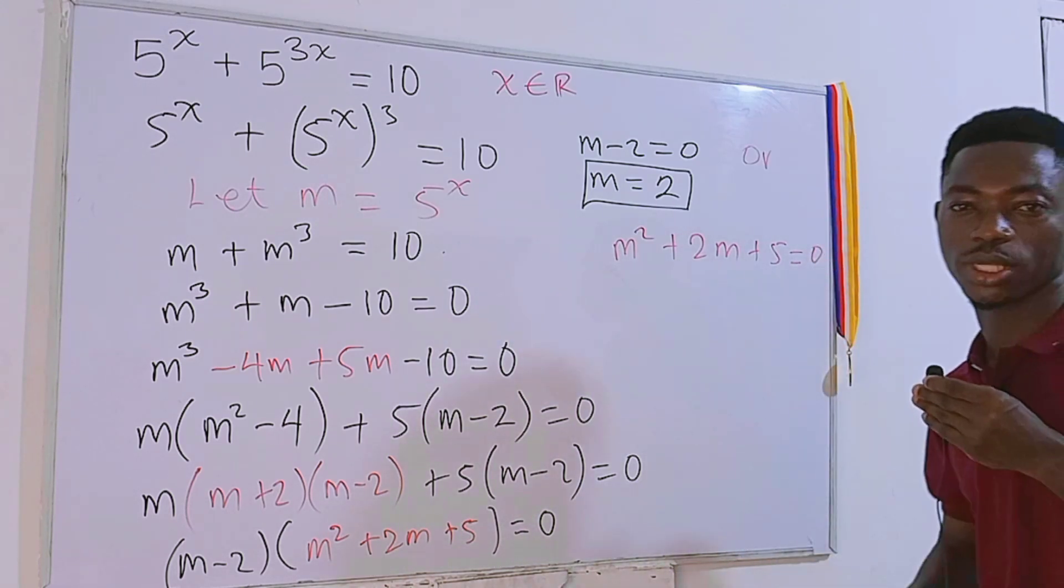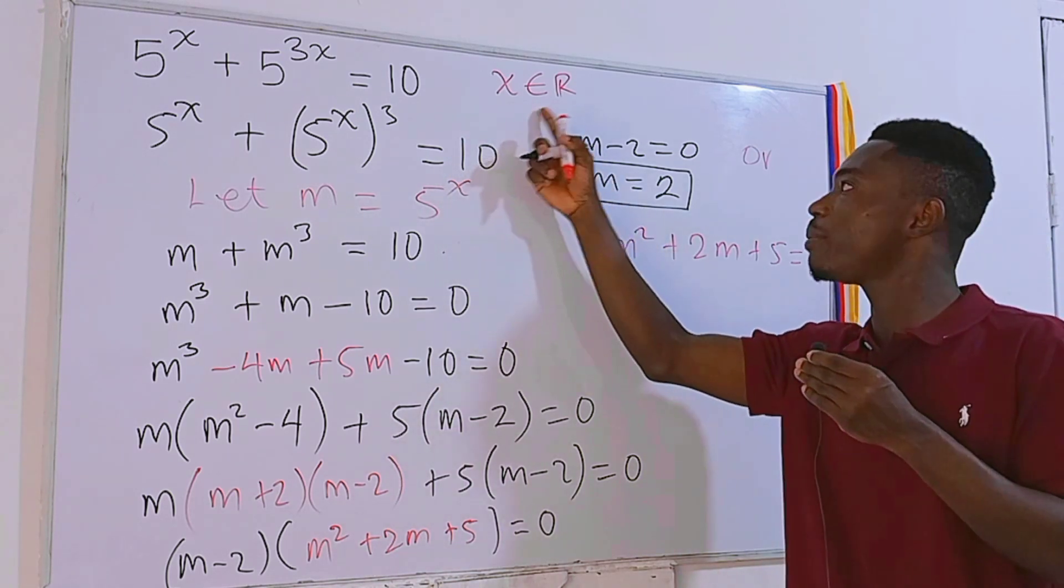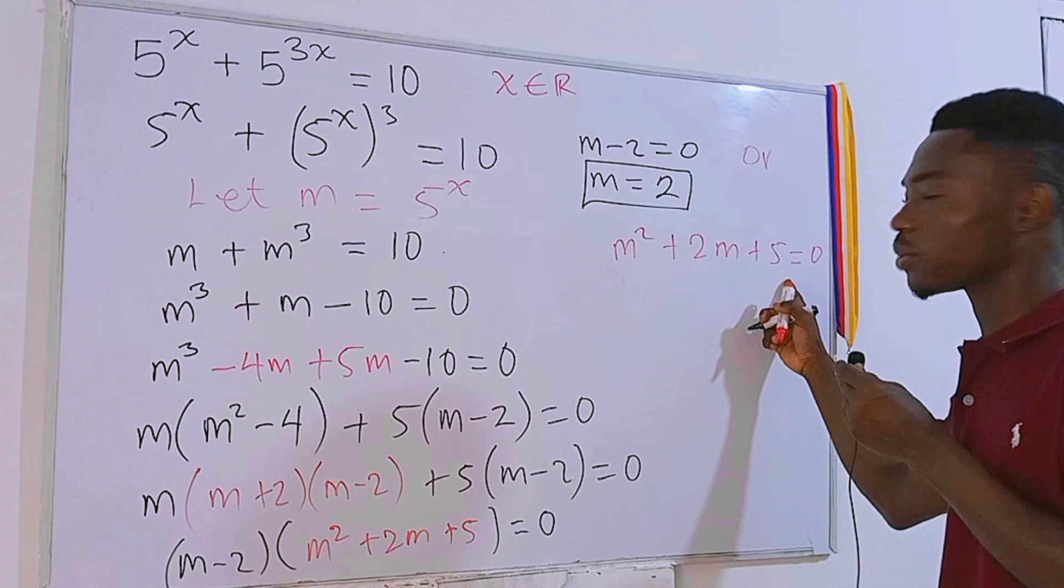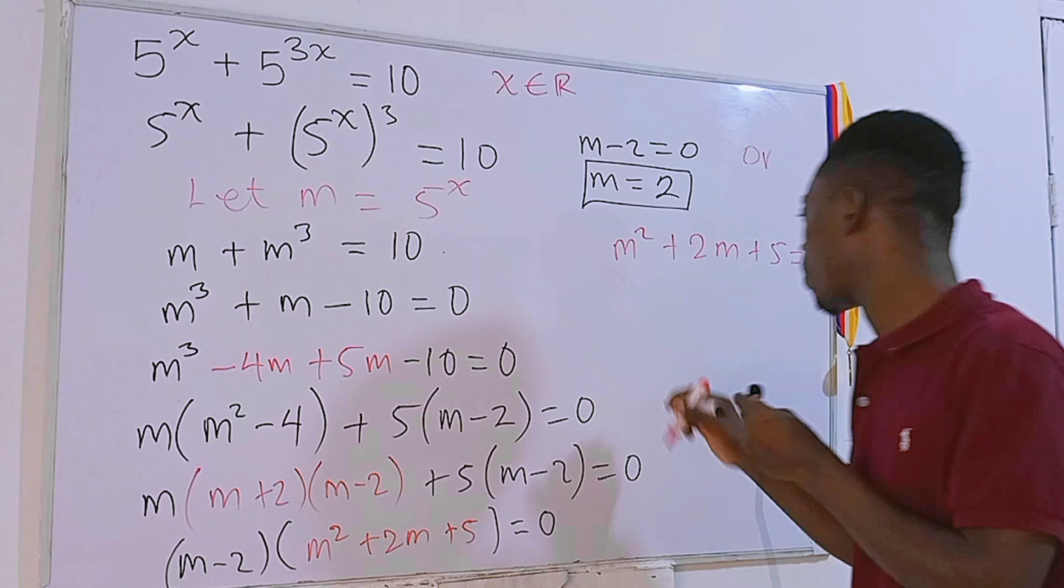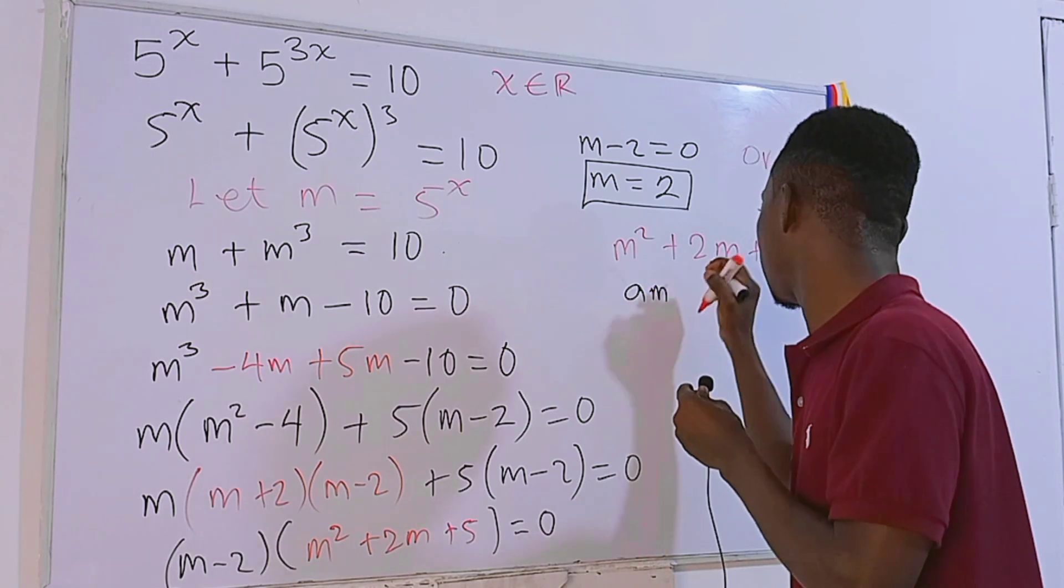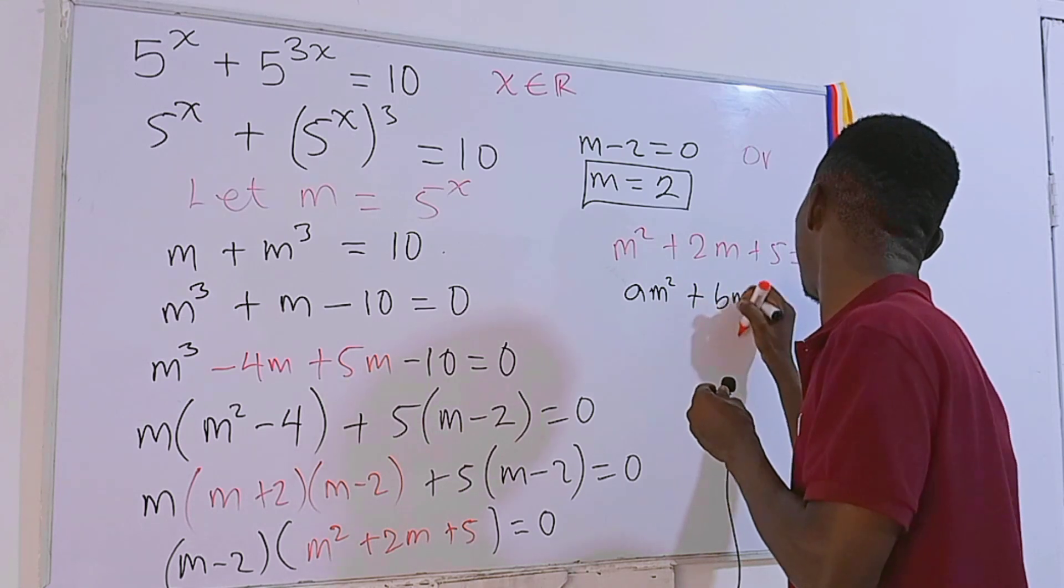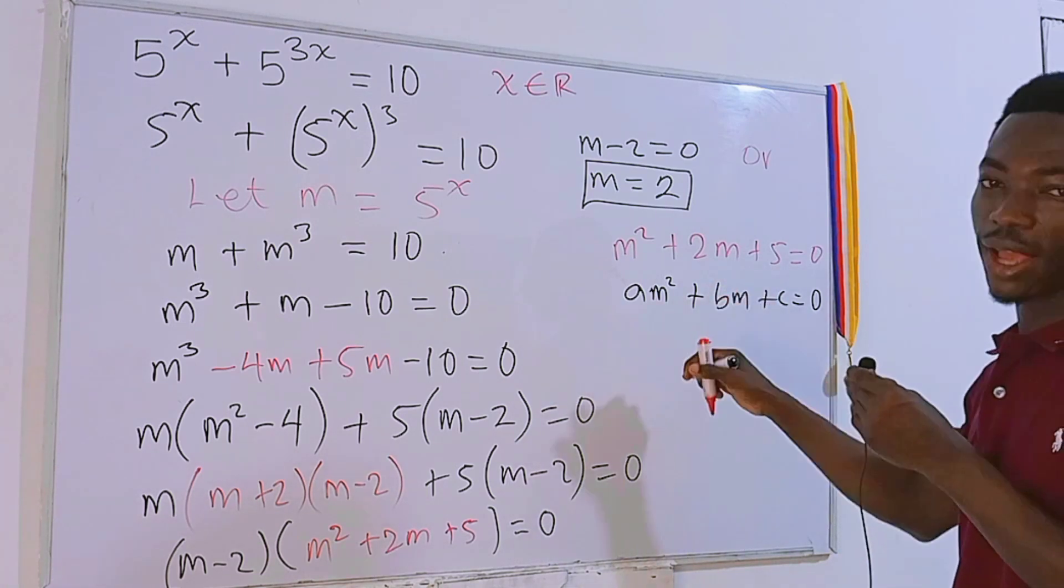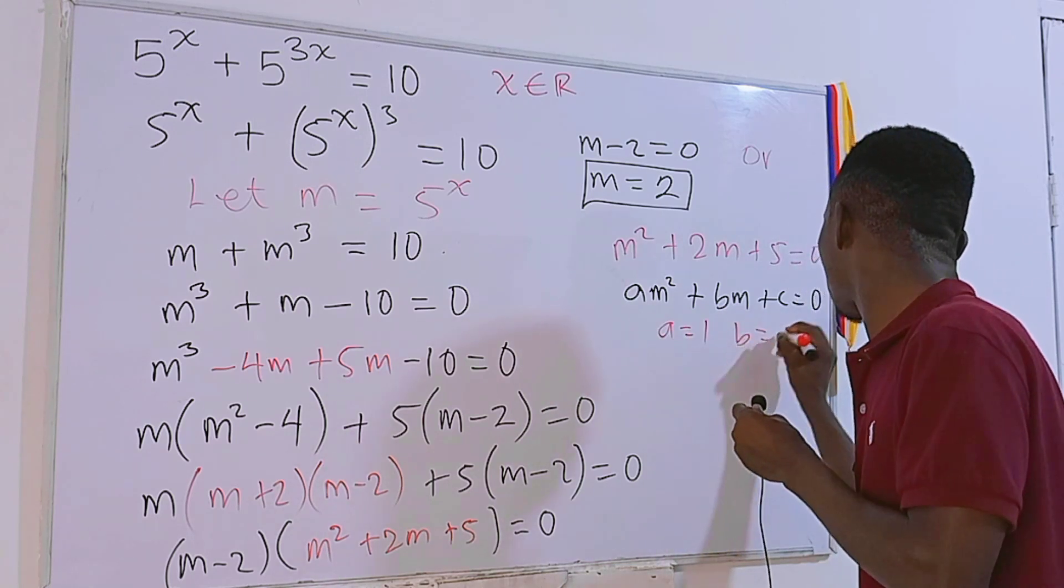We don't have to solve this equation straight away because there is a restriction right here - m is a real number. So first of all we need to use the discriminant to see whether this quadratic equation right here is having real roots or not. But before then, let's compare this to the general quadratic equation: am² + bm + c = 0. Now if you compare this to what we have here, we can clearly see that a = 1, b = 2, and lastly c = 5.